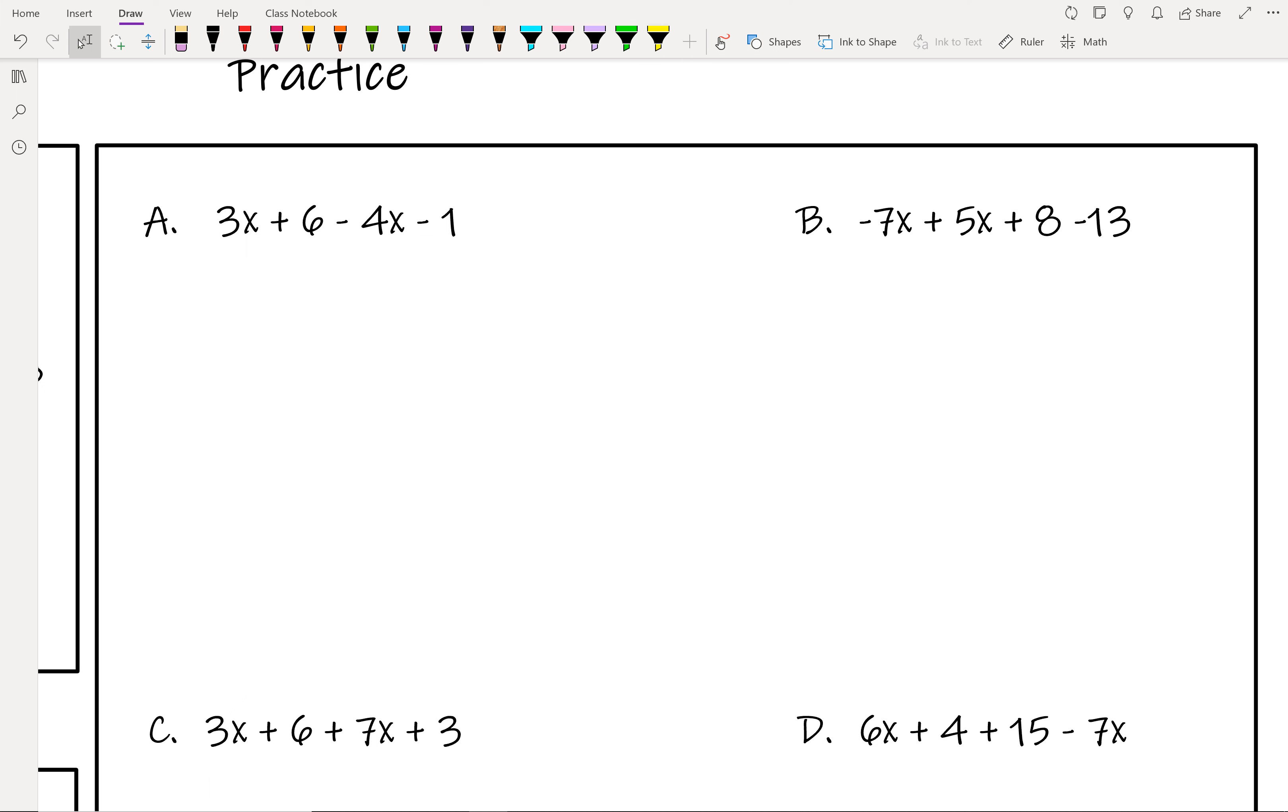So our first example here is we have 3x plus 6 minus 4x minus 1. So the first thing we want to do is we want to move our terms around so that the like terms are together. So the 3x and the other one that has an x with it is that minus 4x. So here's where the symbol or the sign that's in front of your term has to stay with it. So when we move this so that the 3x and the minus 4x are together, we're going to be writing it as 3x, and then that minus sign is going to come along with it to be a minus 4x.